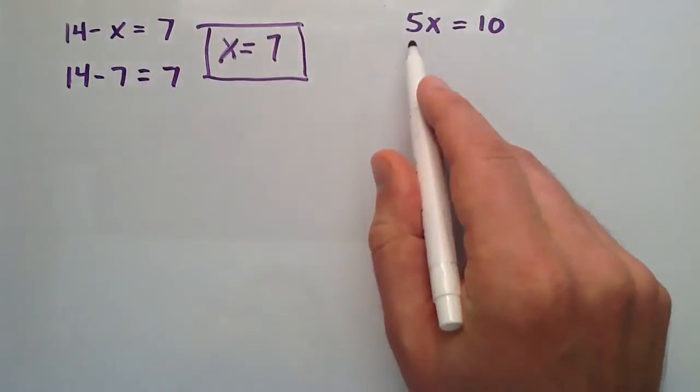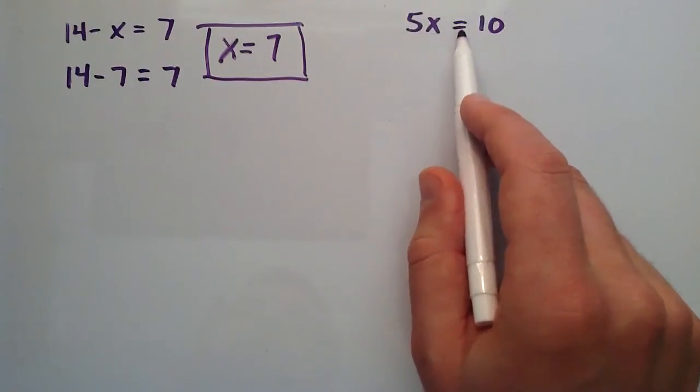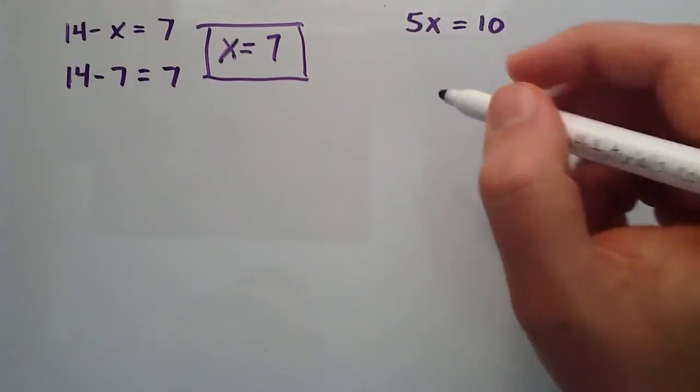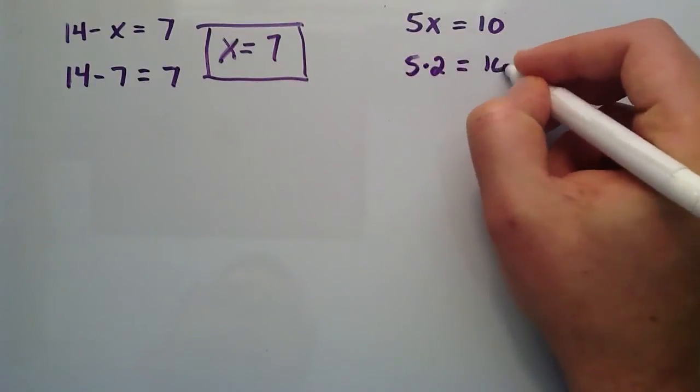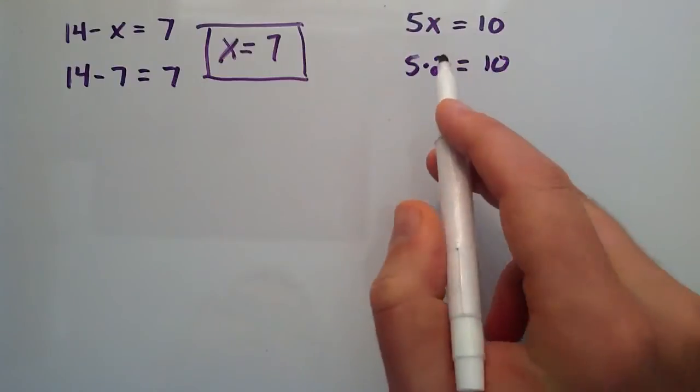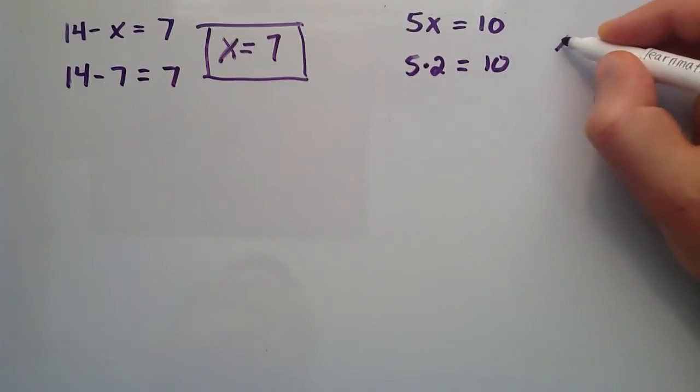Let's look at this equation right here. Now we have 5 times some number equals 10. So, it turns out that 5 times 2 is equal to 10. And so, when x is equal to 2, this statement is true. Therefore, our answer is x equals 2.